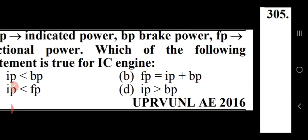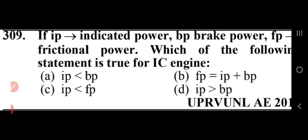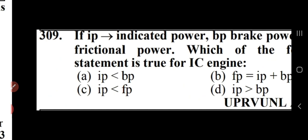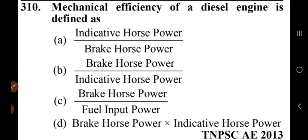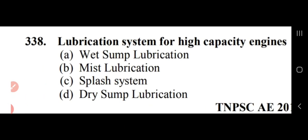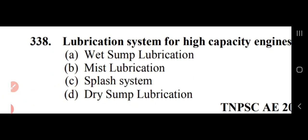If IP is indicated power and BP is brake power, then IP is greater than BP — option D, since indicated power equals brake power plus frictional power. Mechanical efficiency of a diesel engine is defined as BHP/IHP (brake horsepower upon indicated horsepower) — option B.